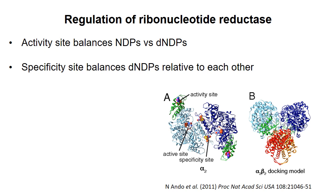Notably, the alpha subunits also have two regulatory sites. One is called the activity site and one is called the specificity site. Binding of nucleotides at the activity site regulates whether the enzyme is active or not, and binding of nucleotides at the specificity site regulates which ribonucleotides the enzyme uses as its substrates.